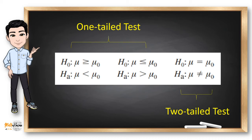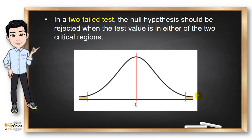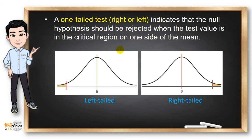The critical and non-critical regions can also be determined using the type of test. We have the one-tailed test and the two-tailed test. In a two-tailed test, we have two critical regions on the extreme right and extreme left, and the null hypothesis is rejected when the test value falls in either of these two critical regions. In a one-tailed test, the null hypothesis is rejected when the test value is in the critical region on one side of the mean. For a left-tailed test, rejection occurs at the leftmost part of the distribution, while for a right-tailed test, the critical region is on the rightmost part.